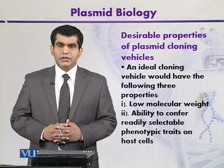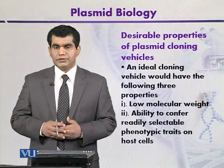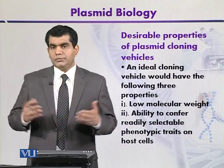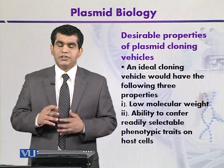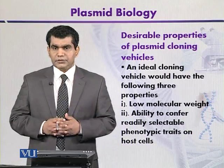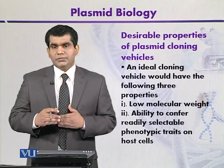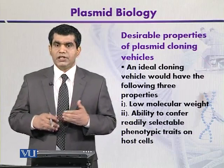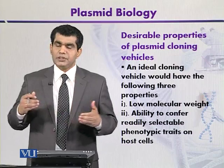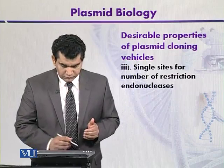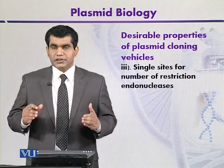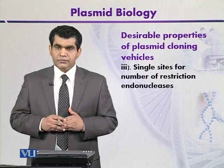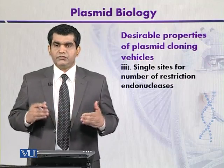Desirable properties of plasmids as cloning vehicles. In gene cloning procedures, when we are going to use plasmids as cloning vectors, they must contain some suitable traits. For example, they must have low molecular weight; secondly, the ability to confer selectable phenotypes on the recipient cells; and third, there must be a single site for different types of restriction endonucleases. Now we can focus on all these three traits one by one.